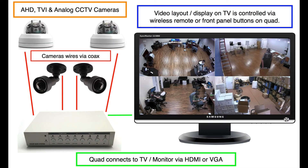Here is how the VMHD4 is set up. Up to 4 security cameras are hard wired to it, typically using RG59 coax cable. The quad has an HDMI and VGA video output that can be used to connect to an HD television or computer monitor. The video output of the quad is controlled using the wireless remote control or the buttons on the front of the quad itself.